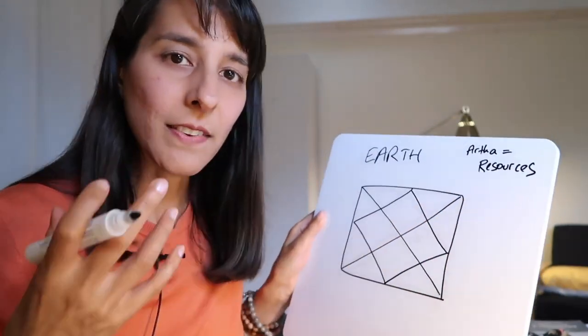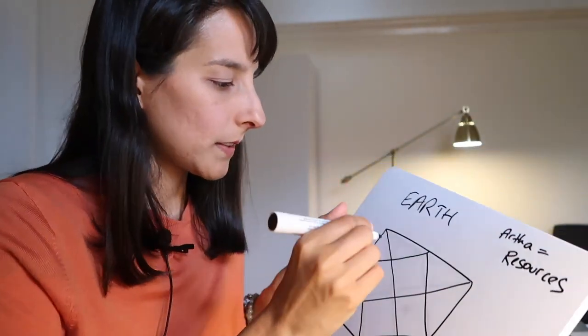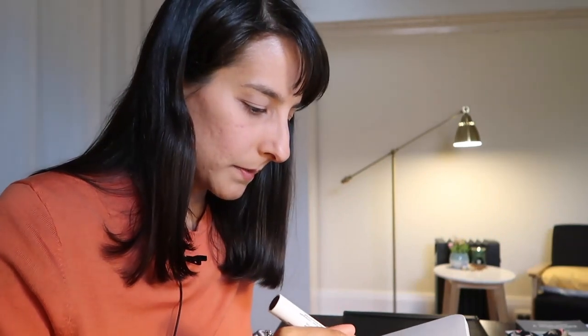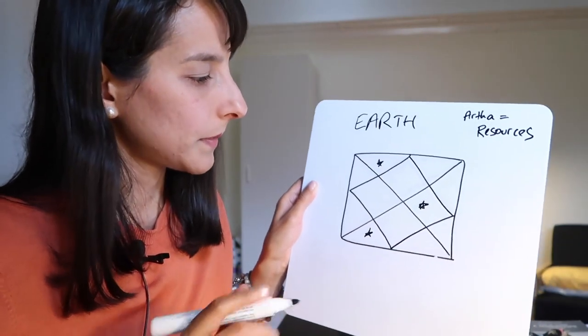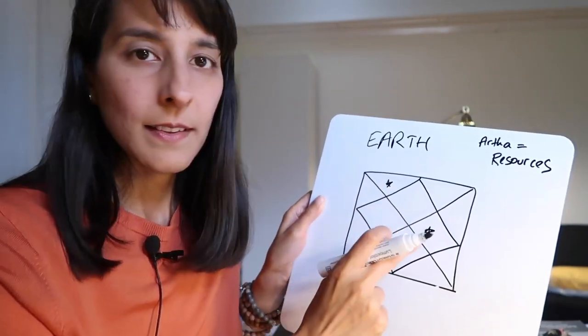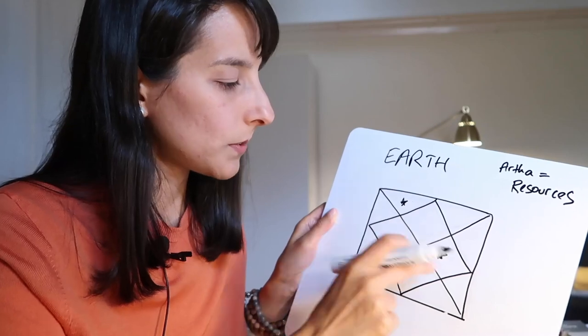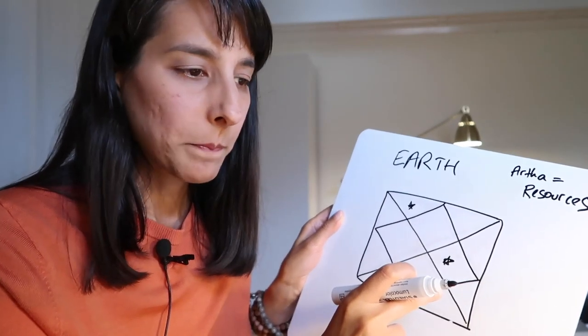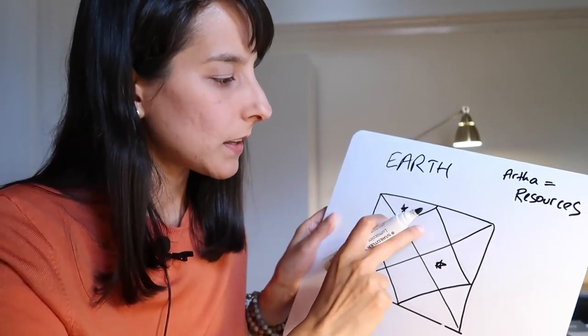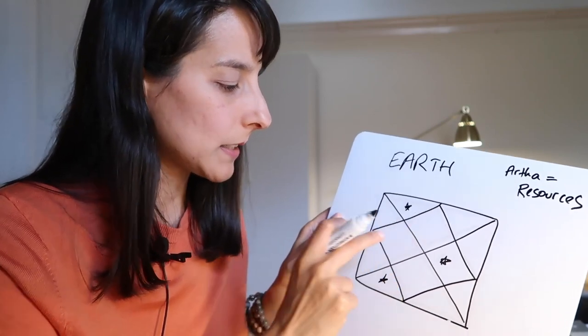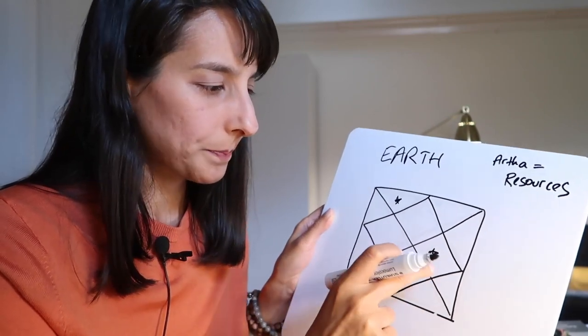These are the artha houses, and artha equals resources—it's our stuff. Where is our stuff kept? We're looking at the second, sixth, and tenth houses. Last time we looked at first, fifth, and ninth, and it was really interesting because those houses have Mars, Sun, and Jupiter. Look at that—no Saturn.